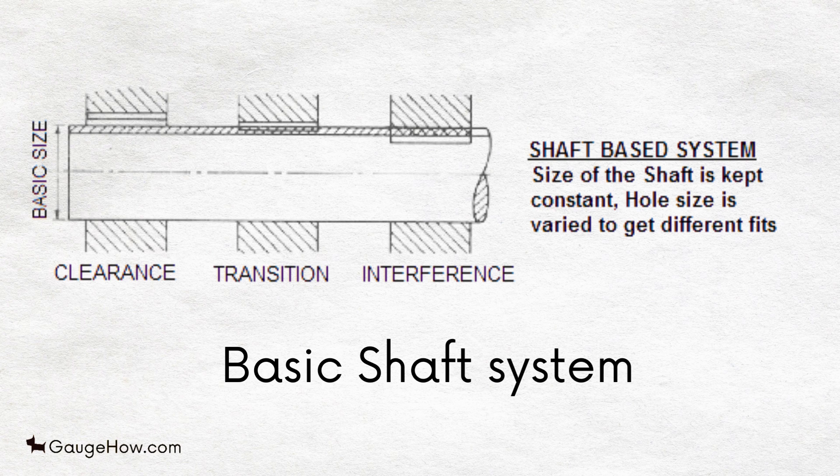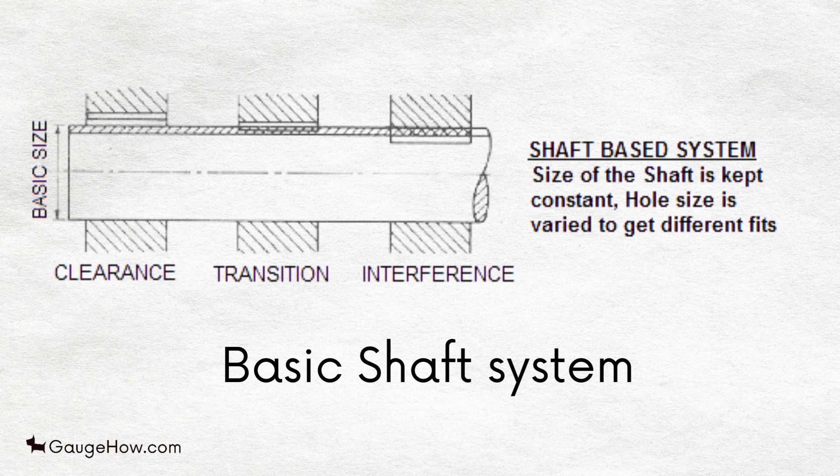Basic Shaft System. In this system, the design system of the shaft is the basic size to which allowance is added to obtain the diameter of the hole.